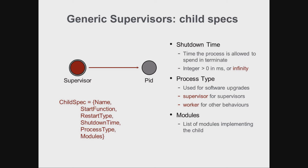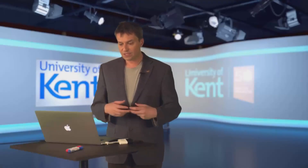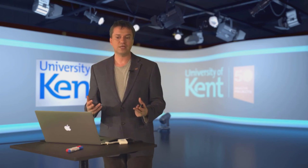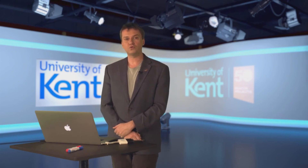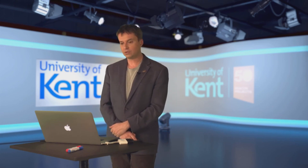Process type and modules are used for software upgrade. You need to tell the supervisor whether the child is a supervisor or a worker, and which modules are implementing the child. Modules are most often callback modules, possibly including other modules the callback module depends on in case of an API change. During a coordinated software upgrade in Erlang, the supervisor will know which processes to suspend and which to resume while the code upgrade is happening.